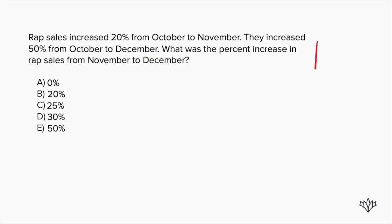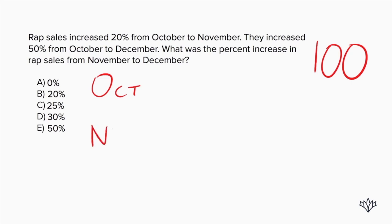So what do we always start with? Good — 100. We're going to say 100 is our starting value. It says that wrap sales increased from October to November, so our first place is October — that's going to be our 100. Now we increase 20% from then to November. If we're increasing by 20% and we're dealing with 100, 20% of 100 is just 20. So we do 100 plus 20, which brings us to 120 for November.